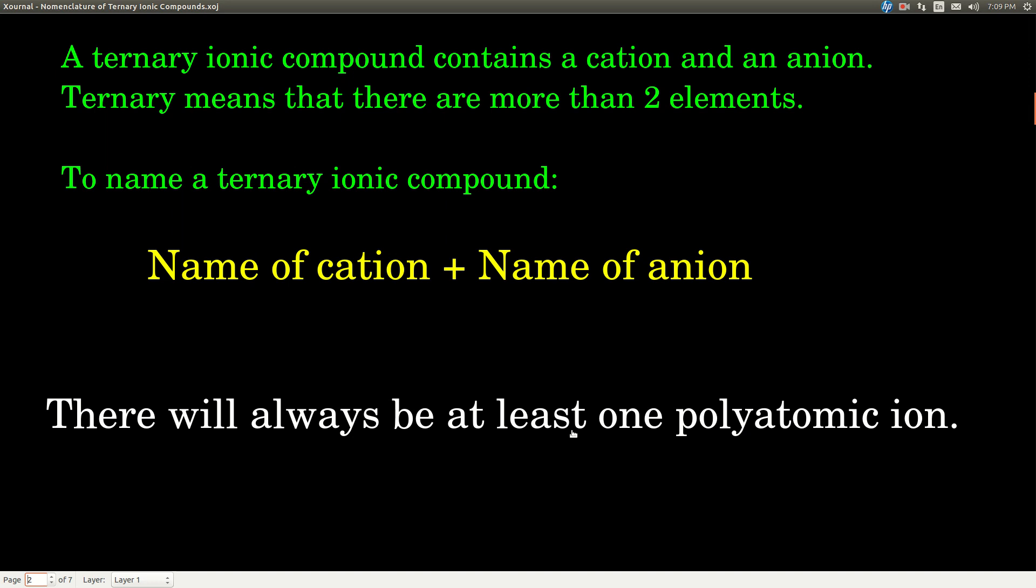Ionic still means that there's a cation and an anion, and as before, the cation is always written first in both the formula and the name, and the anion is always written last in both the formula and the name. So to name a ternary ionic compound, we name it the same way we do with a binary ionic compound. Just say the name of the cation and then say the name of the anion.